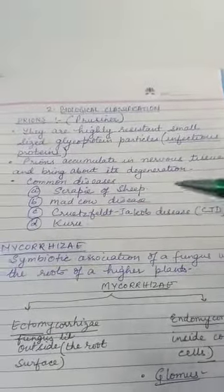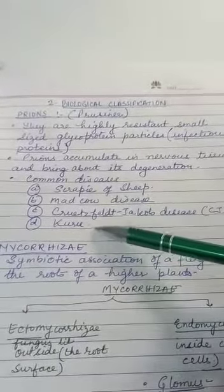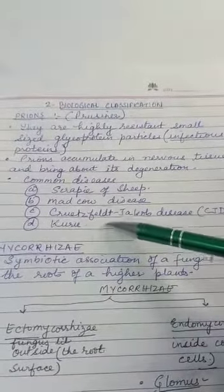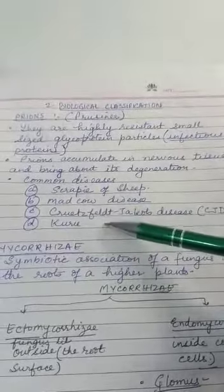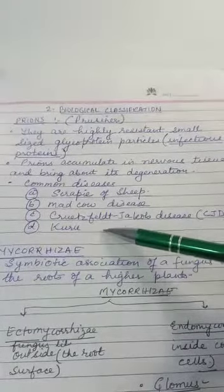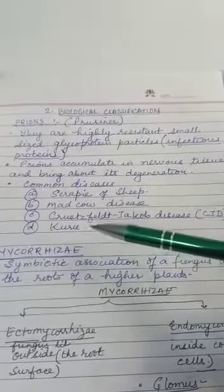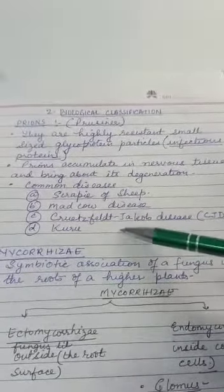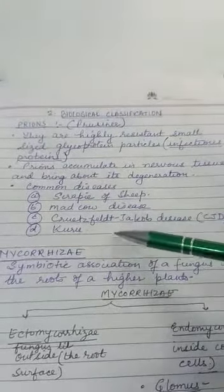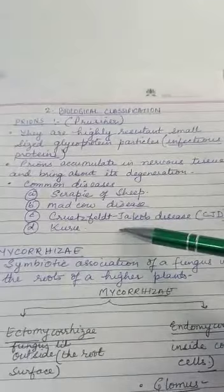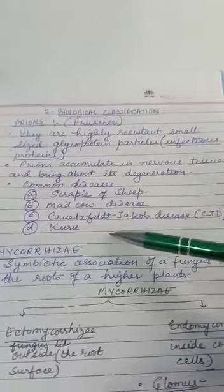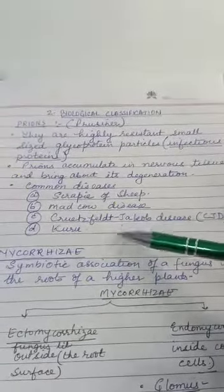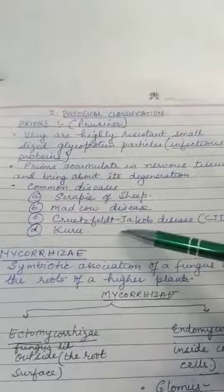Kuru also occurs in human beings — it is said to occur in tribal people who eat human brains. If they eat human brains, the proteins from those brains can enter their body. And once these proteins enter, they cause all the normal proteins being made in our body to also become misfolded and damaged. This way the number keeps increasing, because proteins are not self-replicating — unlike RNA or DNA which are self-replicating. So what happens here is that whatever normal proteins in our body come in contact with these misfolded proteins, they get transformed similarly.